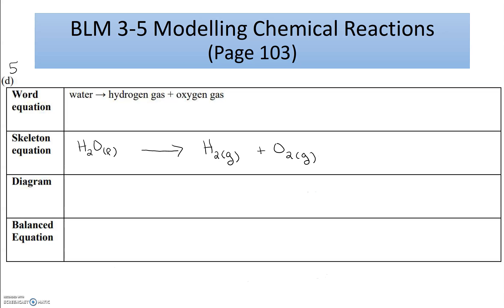In my diagram, I'll represent hydrogen as blue and oxygen as red. In water I have two hydrogens, so I draw a hydrogen circle, another hydrogen circle, and put the oxygen circle in between them — that's one water molecule. On the product side I draw a hydrogen molecule — two blue circles — and an oxygen molecule — two red circles together. Checking blue hydrogens: I have two on the reactant side and two on the product side — hydrogen is balanced.